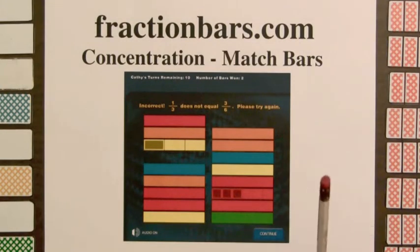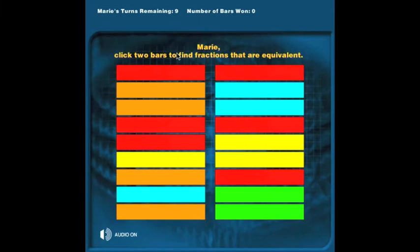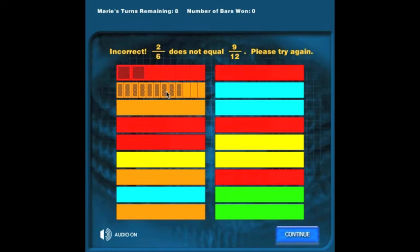We will now look at two games for equality from FractionBars.com. The first game is concentration match bars. The player is given eighteen bars and they turn over two bars. Those bars are different shaded amounts.